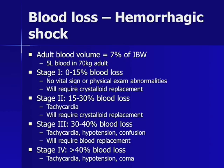In Stage 3, 30 to 40% of blood loss occurs; tachycardia, hypotension, and confusion are seen, and patients require both crystalloid and blood replacement. Stage 4 occurs with greater than 40% blood loss; patients are tachycardic, hypotensive, and often comatose, requiring blood, crystalloid, and almost always aggressive interventions to stop hemorrhage.